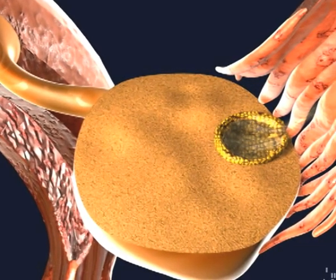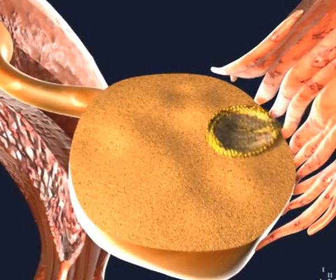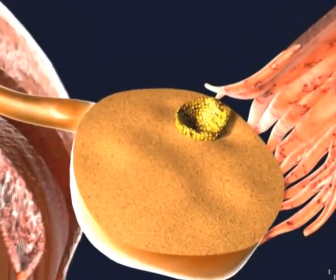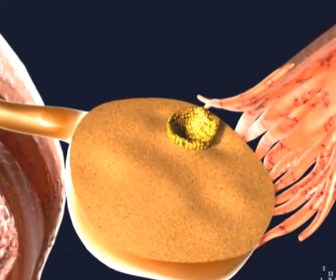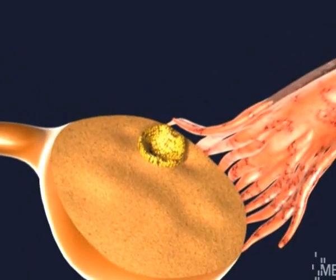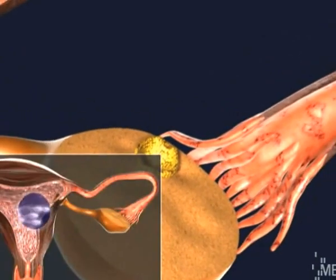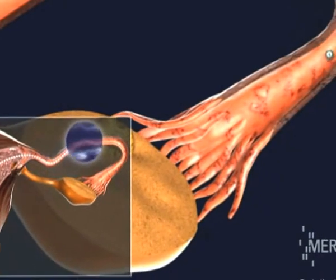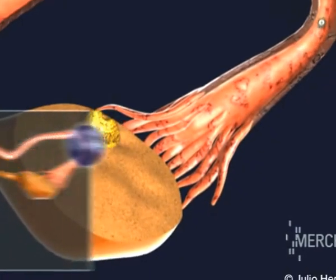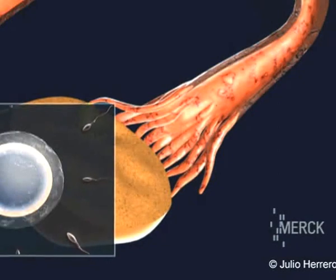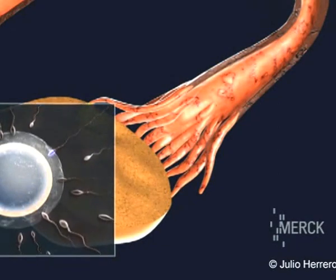The fallopian tube's fimbriae move towards the ovary and catch the oocyte, which stays near the ampullary zone of the tube, waiting to be fertilized. If sexual intercourse occurs, the semen deposited in the vagina starts its ascension into the tube, and the sperm eventually arrive at the oocyte. One of these will succeed in penetrating into the interior of the oocyte.